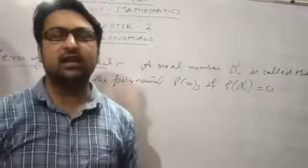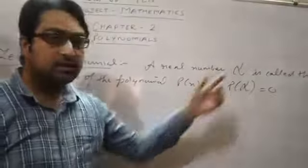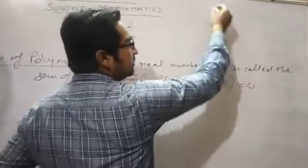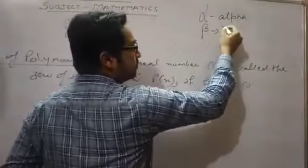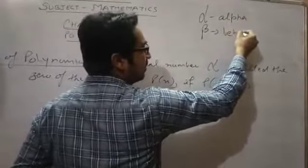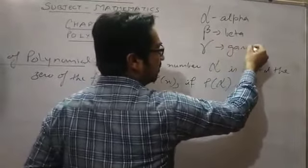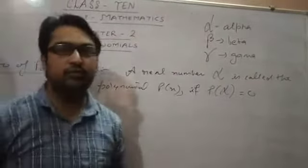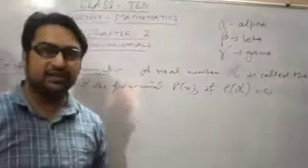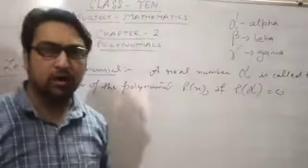This is already from class 9th. Now let us see some symbols: alpha, beta, and gamma. These are mathematical symbols which you have to use in this chapter on polynomials.